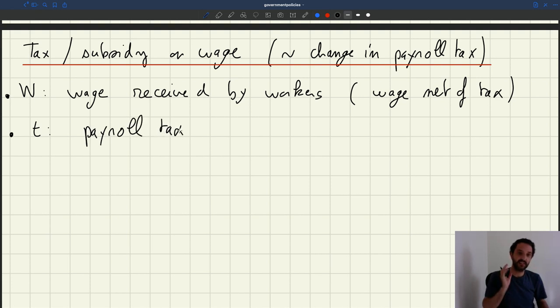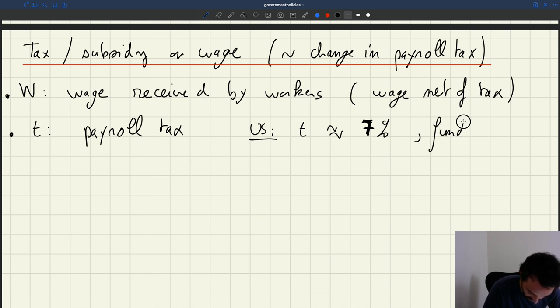So that's a tax that's imposed on your wage. In the US, T is around seven percent, just slightly above seven percent. And it's used to fund the UI system, unemployment insurance system.